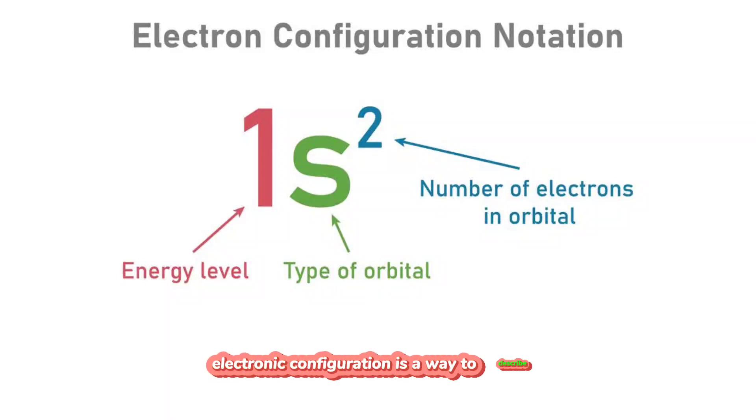Electronic configuration is a way to describe how electrons are distributed in the energy levels and orbitals of an atom. It's typically written as a series of numbers and letters. Here's how it works.